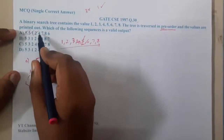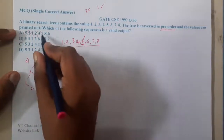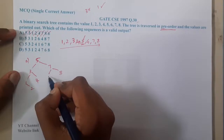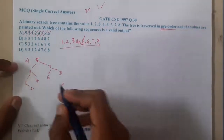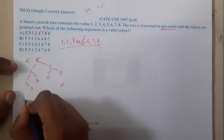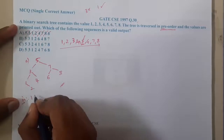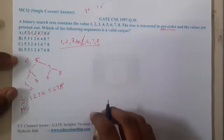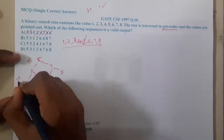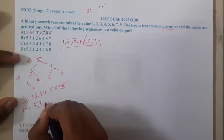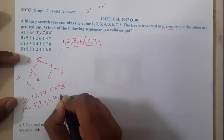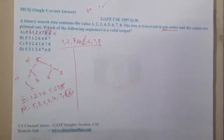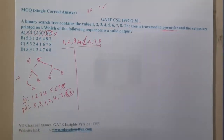Moving on: 7 will be on the right side, 8 will be here, and 6 will be to the left of 8. Now let us verify in-order — we get 1 2 3 4 5 6 7 8, which is correct. Now checking pre-order: we get 5 3 1 2 4 7 6 8. The order in option A is different, so option A is wrong.